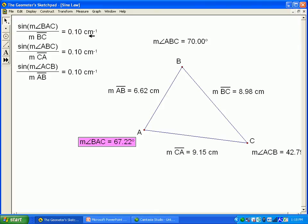The units in centimeters are only because we're dividing by a measurement in centimeters. The sine of angle ABC, which is 70 degrees, divided by 9.15, the AC side, is 0.1 as well. Notice that all of them are the same.